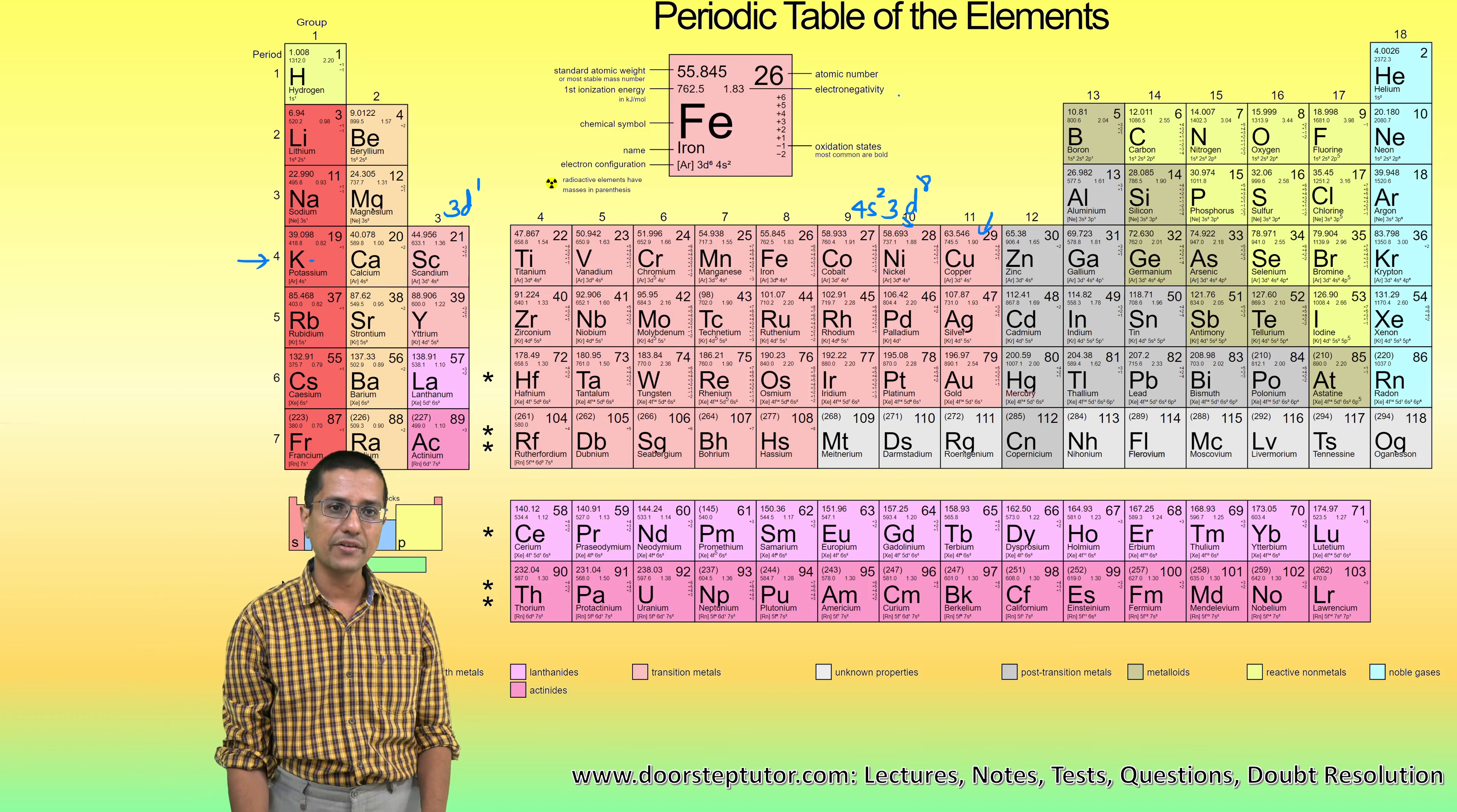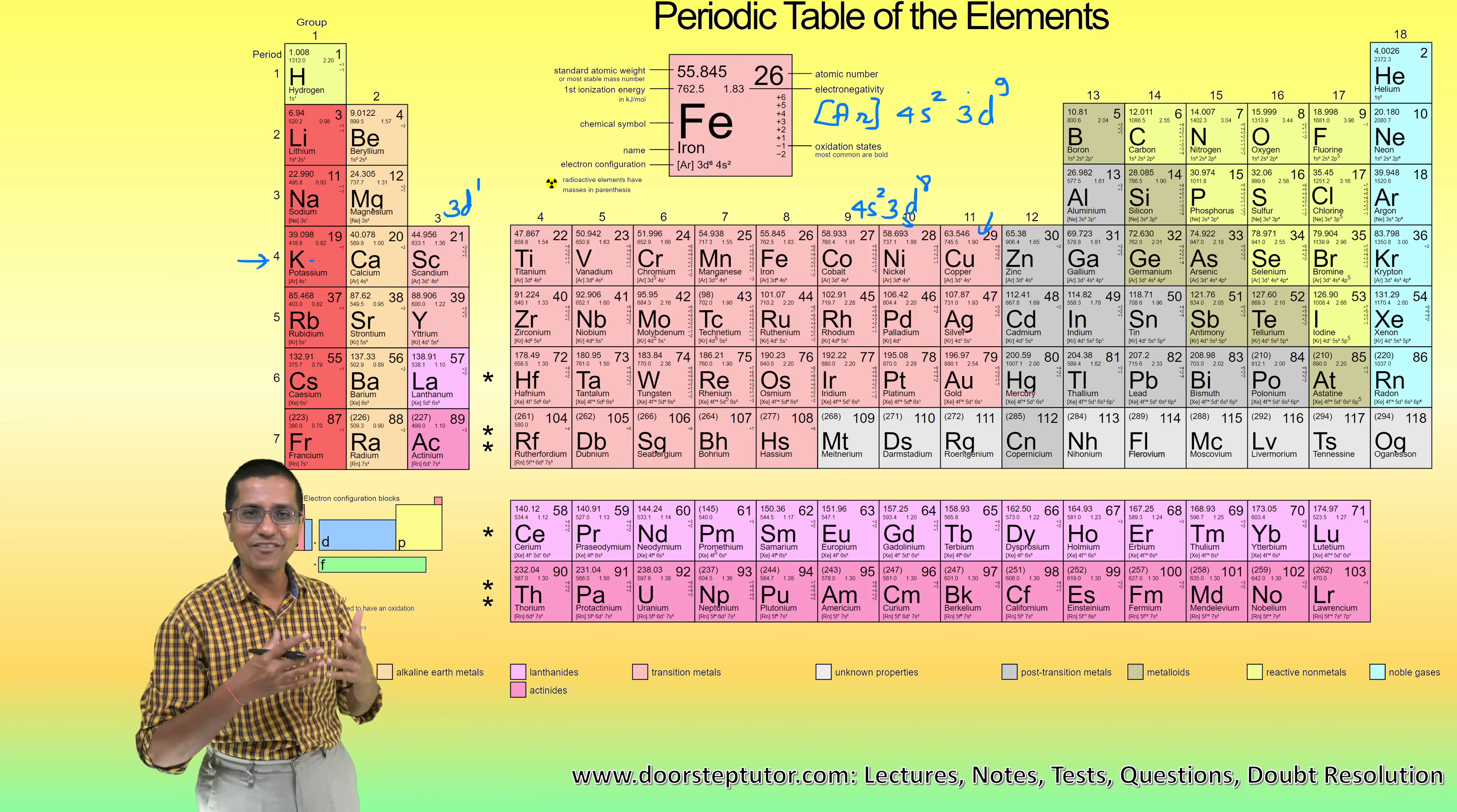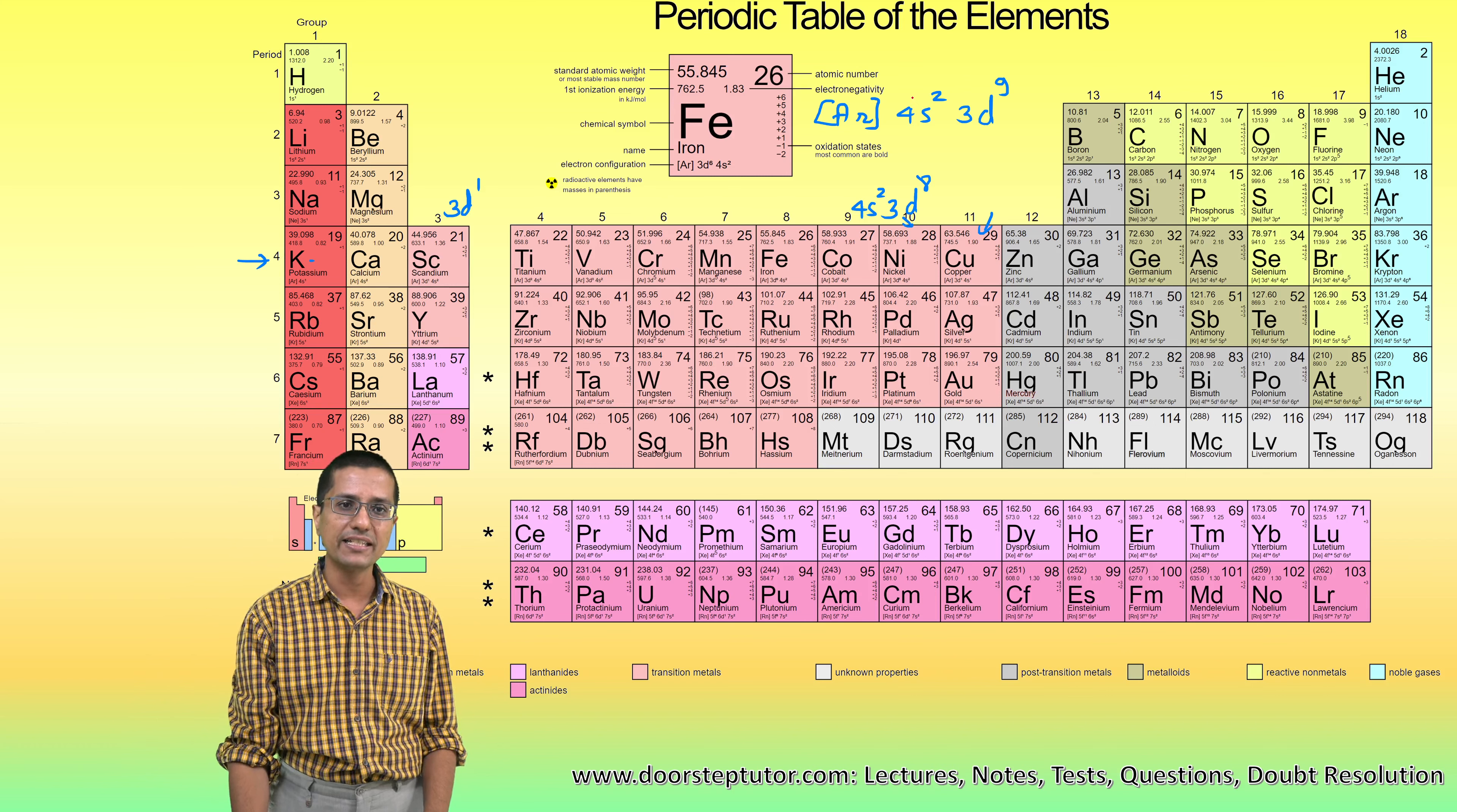...and then there should be 4s² and on top of nickel there will be an extra electron, so we would get to 3d⁹. Now you would write this as an answer, and it would be unfortunately completely wrong. Although according to the periodic table that is what it suggests, this is not the electronic configuration of copper.